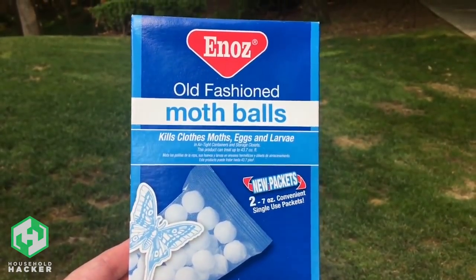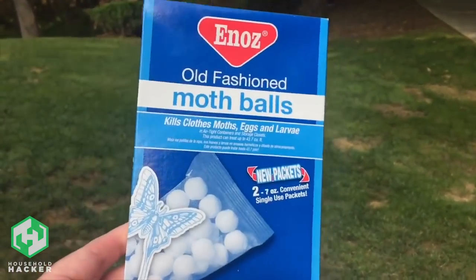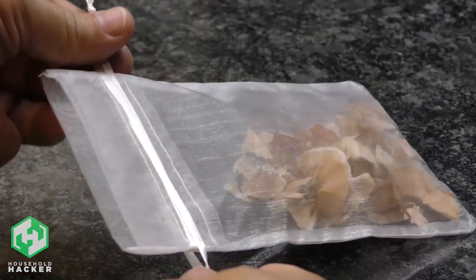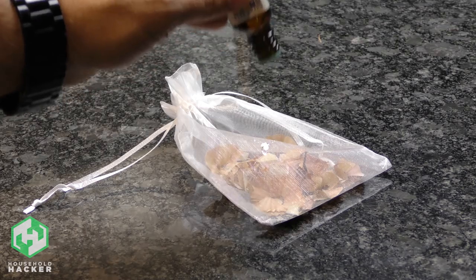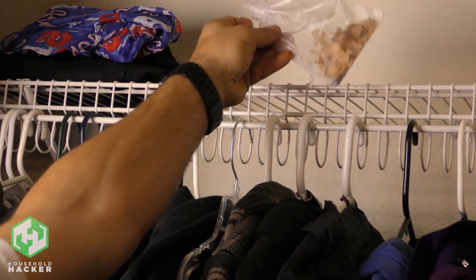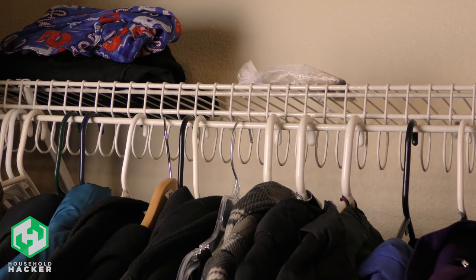If you want to prevent or eliminate moth infestations without the fumes from mothballs that are harmful to humans and pets, try this alternative. Save those pencil shavings and place them in a small cloth drawstring bag. You can add a few drops of lavender for good measure and as an additional moth repellent. Now you can free your wardrobe from moths by placing these bags of pencil shavings nearby.